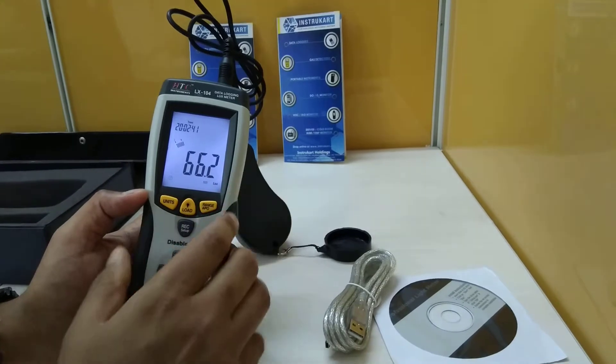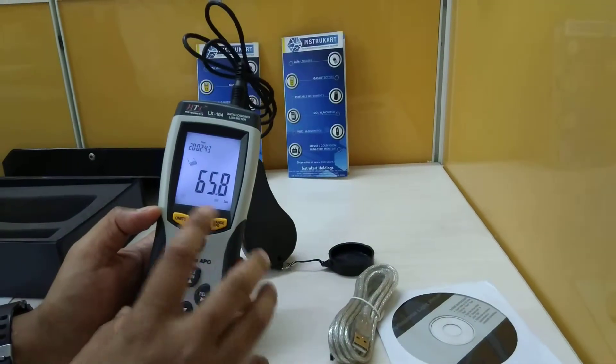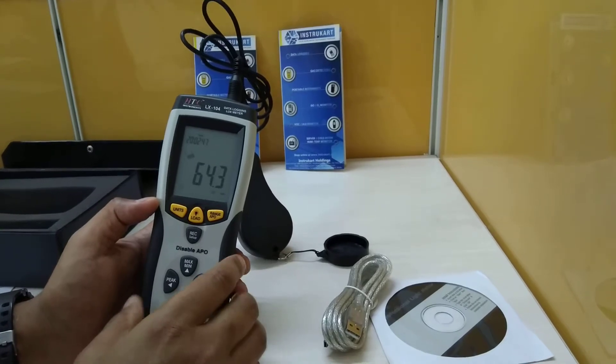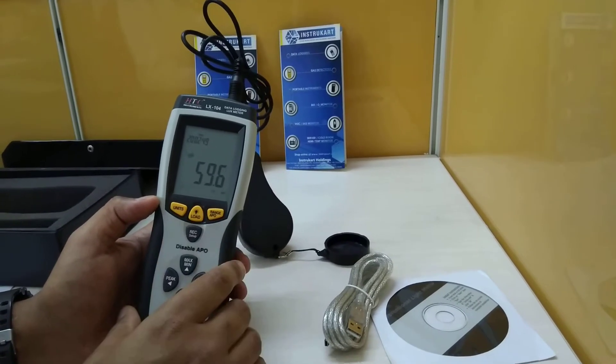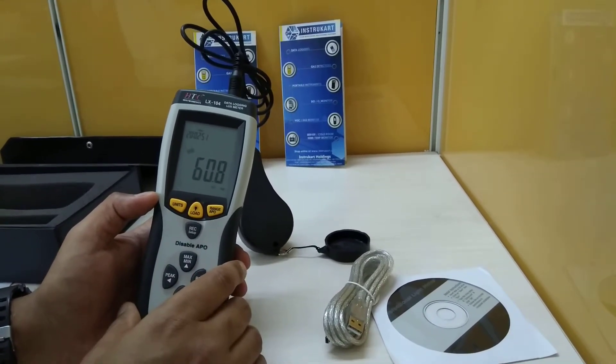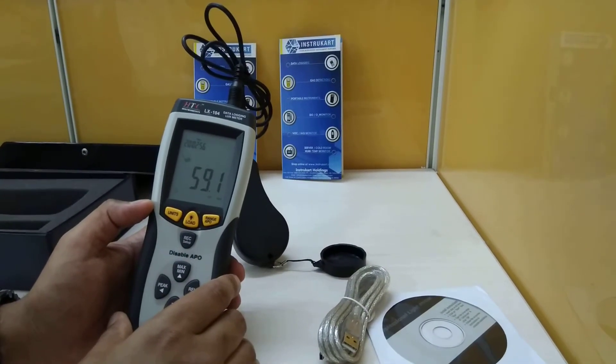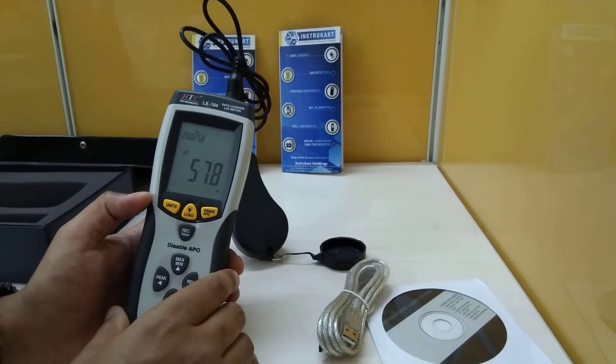You can see the meter, and it also has an auto power-off option after 15 minutes. It has 99 values in the memory, and the data logging capacity is around 16,000 values for logging the lux.